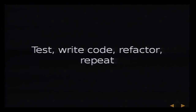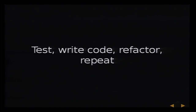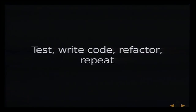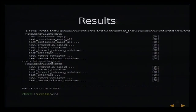We continue the process: write a test, write the code to make it pass, and refactor as we go along — because you'll often find you're creating containers in the same way and wanting to clean up after tests by destroying containers. As you implement more of the interface in your fake clients, you can refactor the tests further. Eventually we have implementations of listing containers, inspection of containers, creation of containers, and removal of containers. It's quite useful as it stands — we could probably make use of this at work.